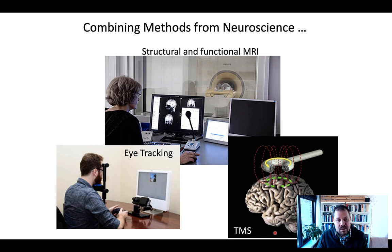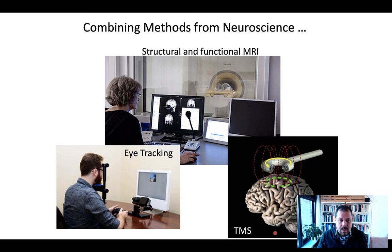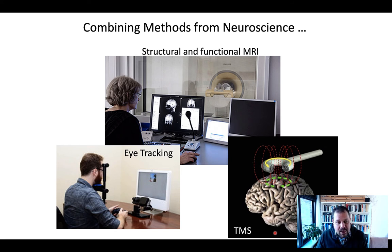You can look at how different structures in the brain correlate with different behaviors. So if you have more neurons in one structure, or if one of the structures is better trained than others, how does this relate to economic behavior?